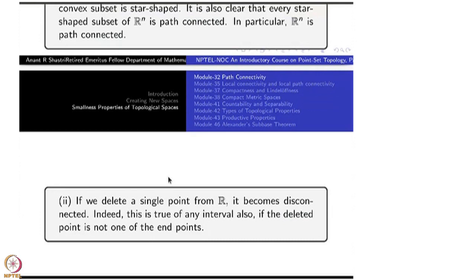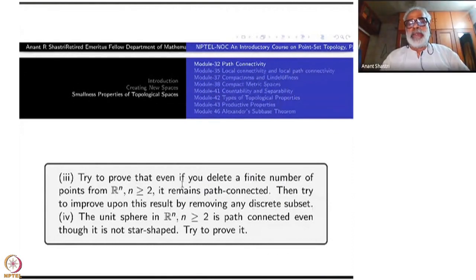But if you delete one point from R, why it is not path connected? That is not obvious. You have to use something deeper about real numbers. We will come to that soon. Try to prove that even if you delete a finite number of points from R^n, n greater than or equal to 2, it remains path connected. This is immediate. If you remove one point from R, it gets disconnected. But if you remove finitely many points from R^2, it is still connected. You can join them by path. I would like you to leave it to you as an exercise.